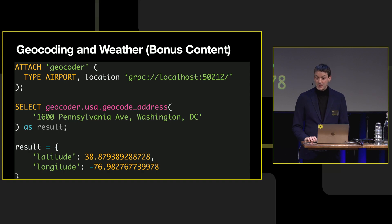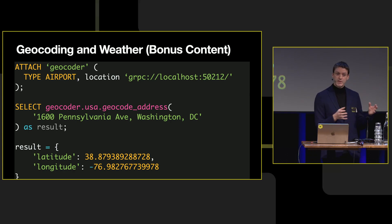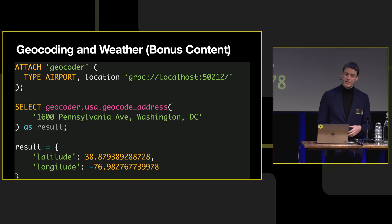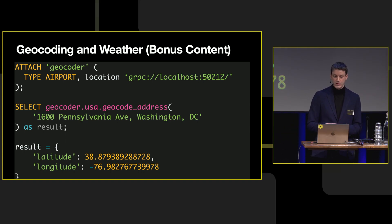There are a lot of people who do geospatial, and this is our bonus demo. Geocoding is a big challenge — it's the process where you convert an address into a latitude and longitude, or you go in reverse, giving a latitude and longitude to find where you are actually located.